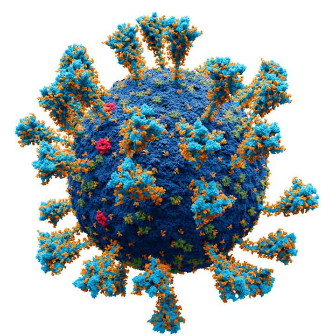There are three main theories of the origins of viruses. 1. Regressive Theory: Viruses may have once been small cells that parasitize larger cells. Over time, genes not required by their parasitism were lost. The bacteria Rickettsia and Chlamydia are living cells that, like viruses, can reproduce only inside host cells. They lend credence to this theory, as their dependence on parasitism is likely to have caused the loss of genes that enabled them to survive outside a cell.